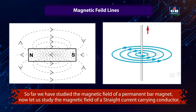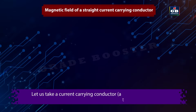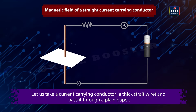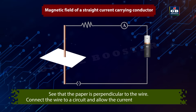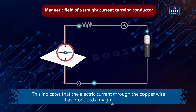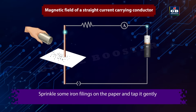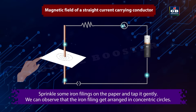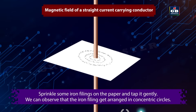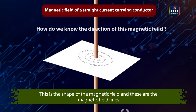So far we have studied the magnetic field of a permanent bar magnet. Now let us study the magnetic field of a straight current-carrying conductor. Let us take a current-carrying conductor, a thick straight wire, and pass it through a plain paper, with the paper perpendicular to the wire. Connect the wire to a circuit and allow the current to pass through it. Now bring a magnetic compass near the conductor — we can observe the deflection of the compass needle, indicating that the electric current through the copper wire has produced a magnetic effect. Sprinkle some iron filings on the paper and tap it gently; we can observe that the iron filings get arranged in concentric circles. This is the shape of the magnetic field and these are the magnetic field lines.